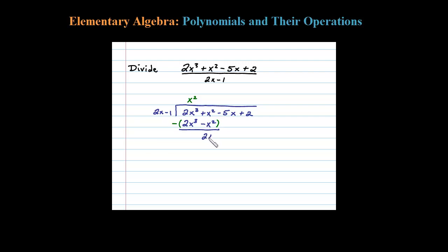And then what we're going to do is bring down the next term, so minus 5x plus 2, and do it again. So what times 2x will match 2x squared?